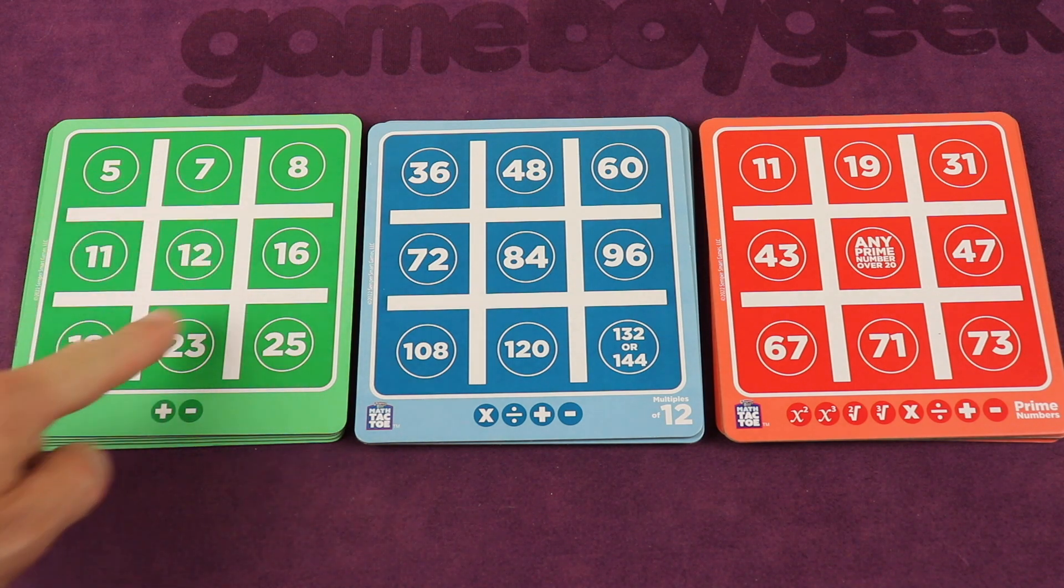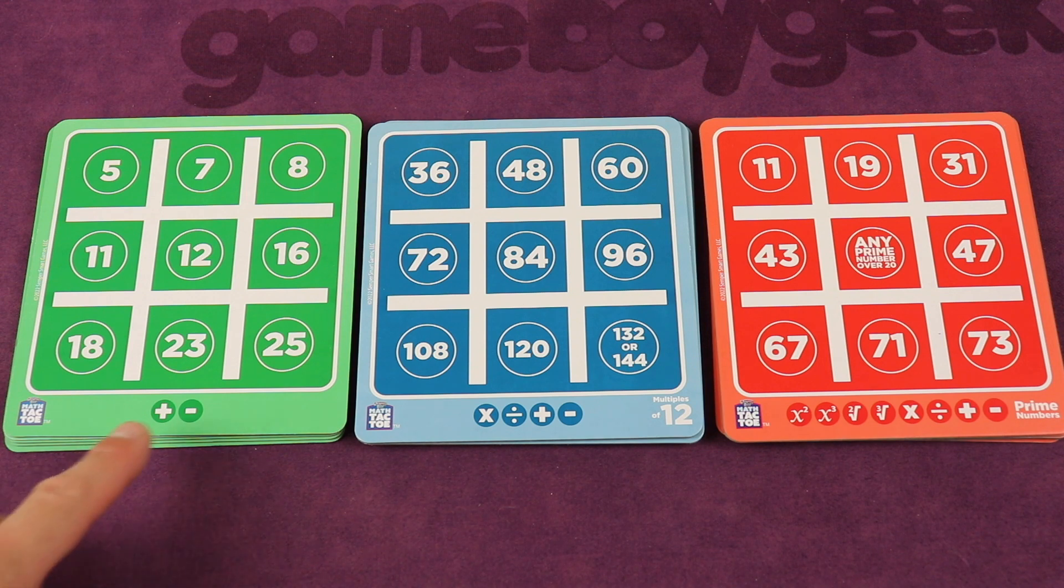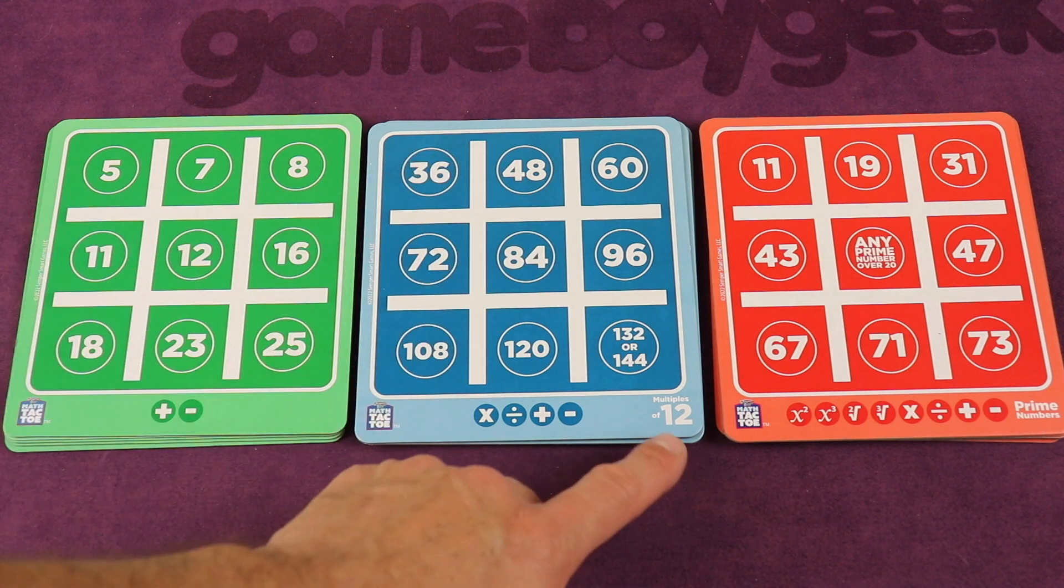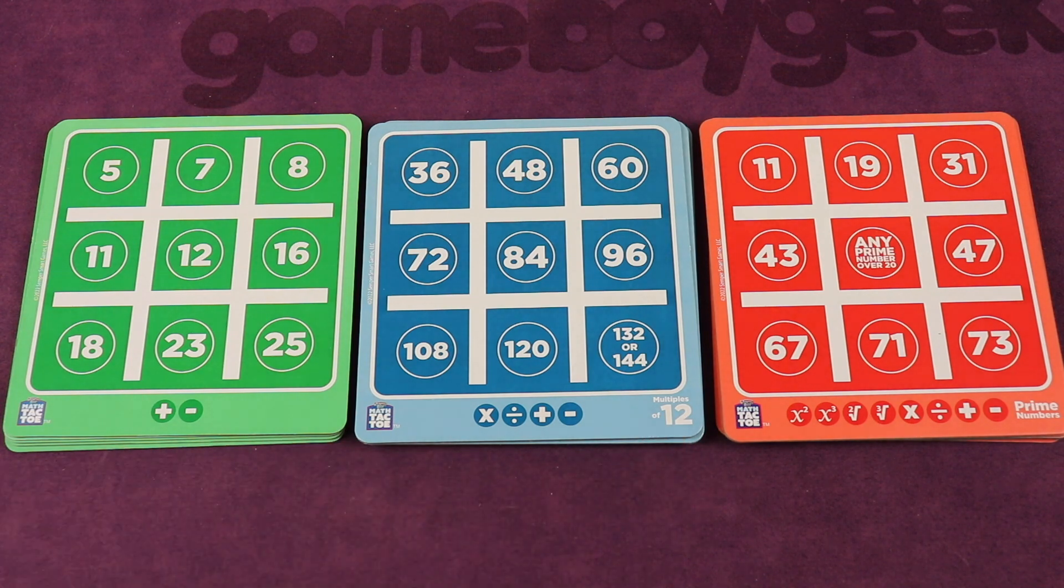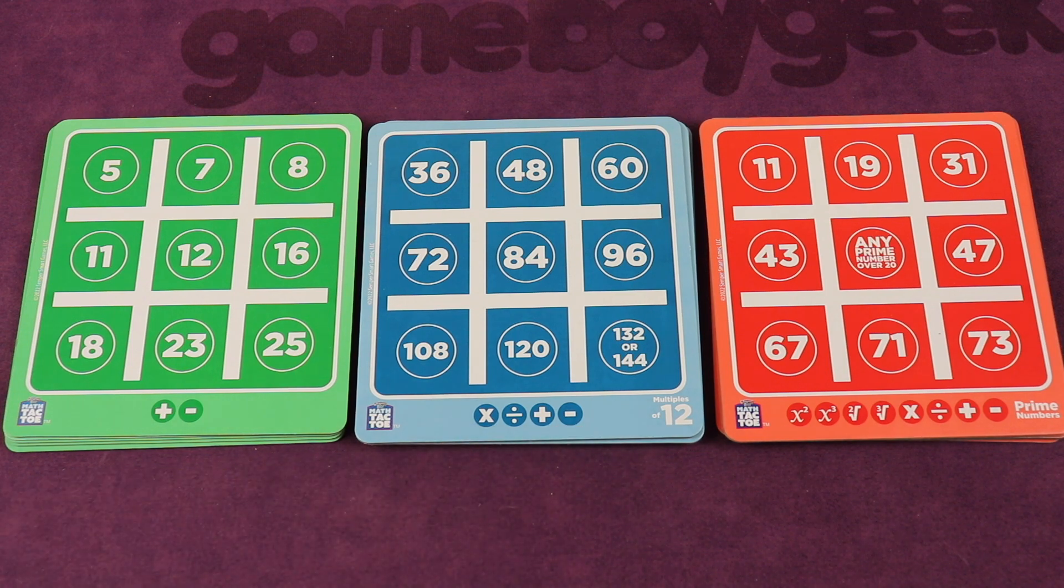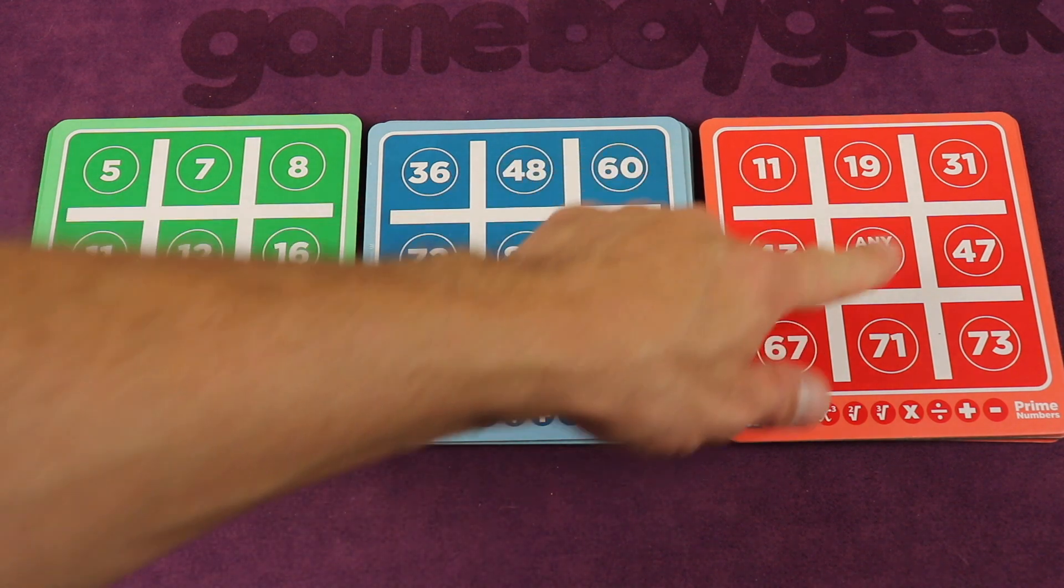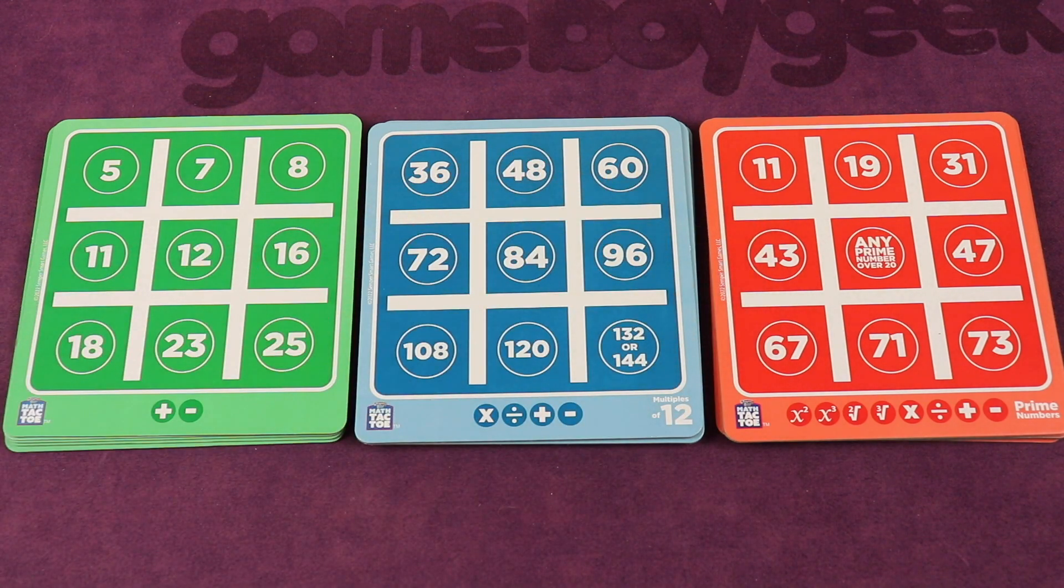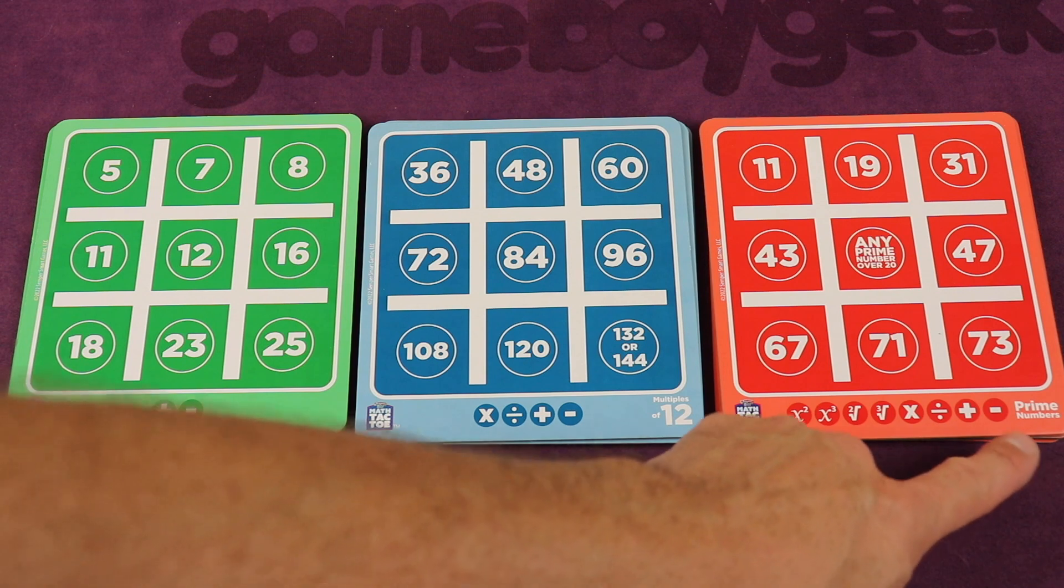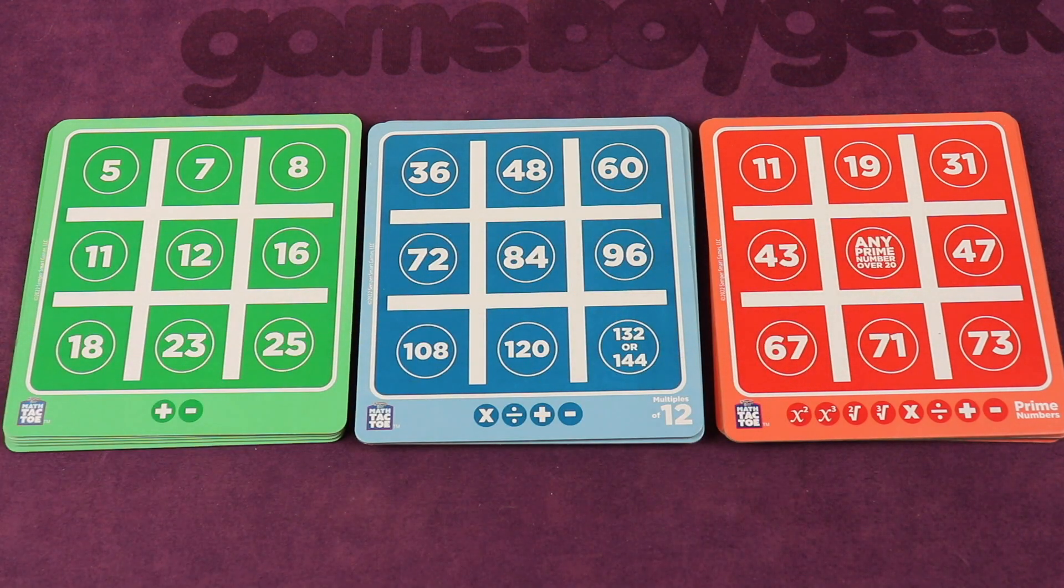The cards are double-sided and the different colors represent different levels. For example, green is beginner, generally for ages eight and up with addition and subtraction. Blue is intermediate, using timetables—this grid is for multiples of twelve. This is generally for ages ten and up, doing addition, subtraction, multiplication, and division. The advanced one is generally for ages twelve and up, adding all sorts of different formulas. All of these numbers are prime numbers.